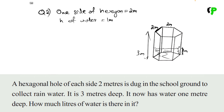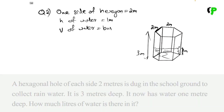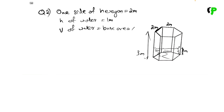Then we will get the volume. Volume of water is base area into height. The base is the shape of the hexagonal shape.